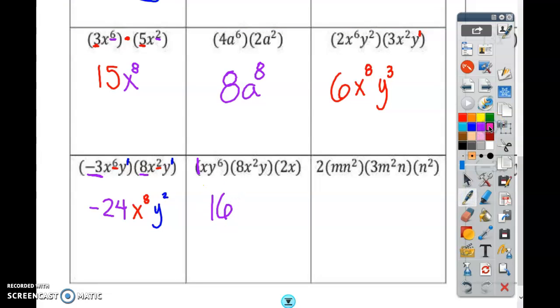How many X's? I have 1 right here. I have 2 right here. And I have 1 right here. How many in total? 4. 1 plus 2 plus 1 is 4. X to the 4th power. And how many Y's do I have? I have 6 right here and 1 right here. Total is 7. Y to the 7th power.